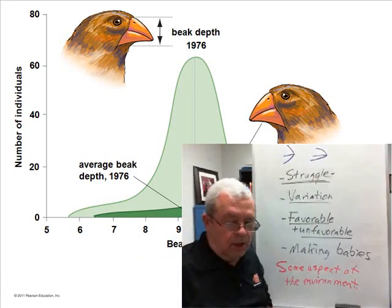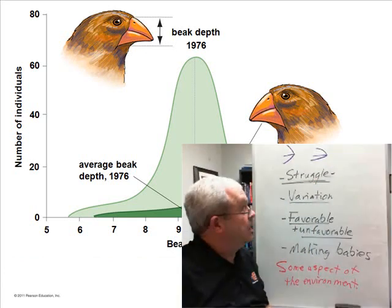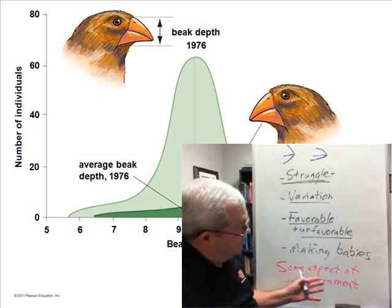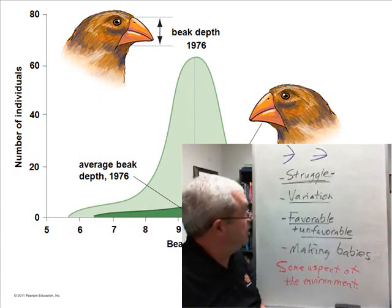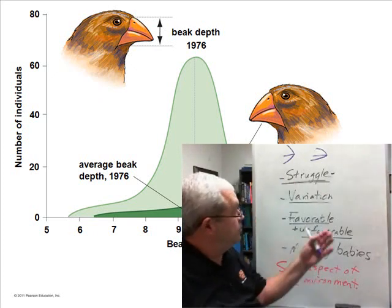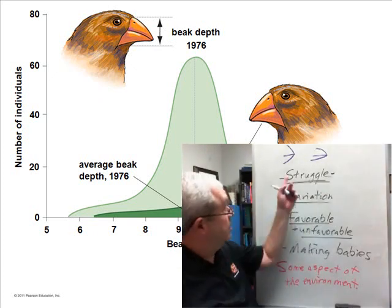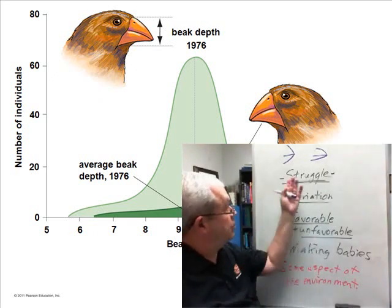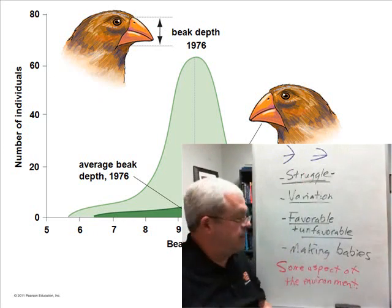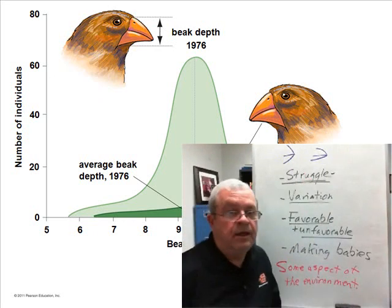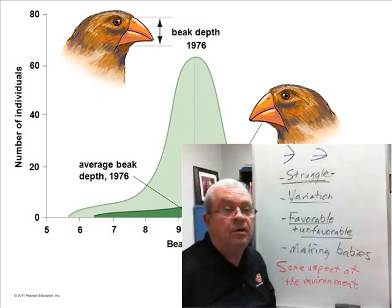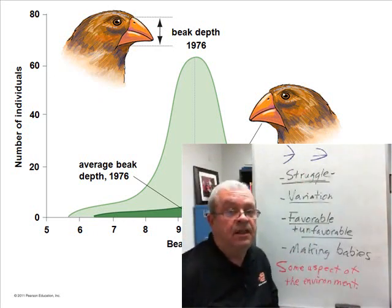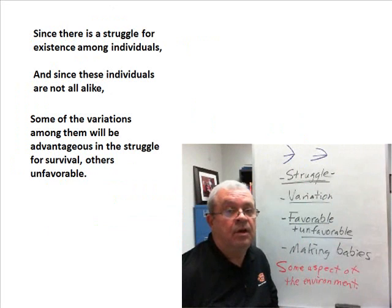How does this fit in with the scheme of natural selection? Where's the variation, but where's the struggle? What aspect of the environment is providing the struggle or the selective pressure?